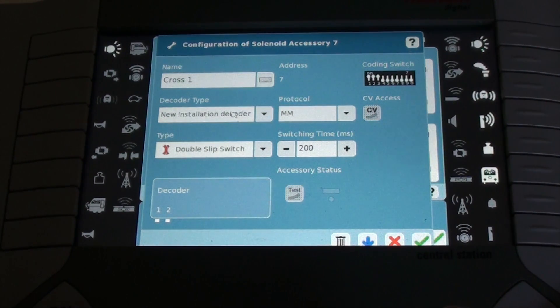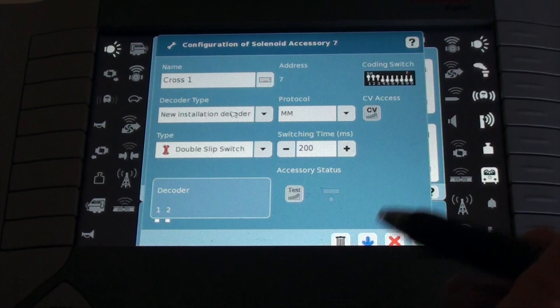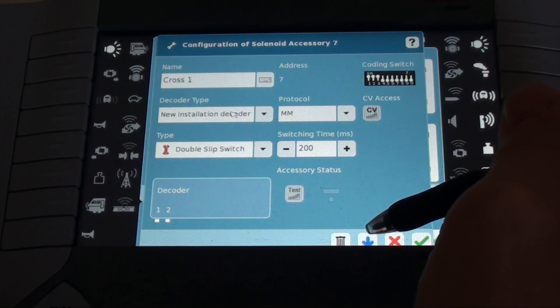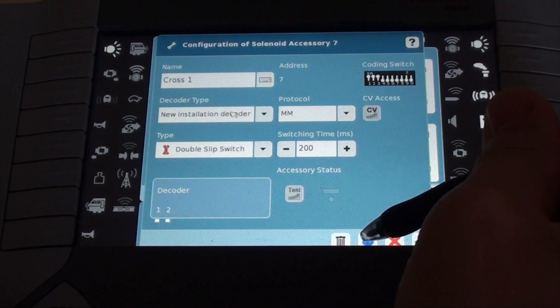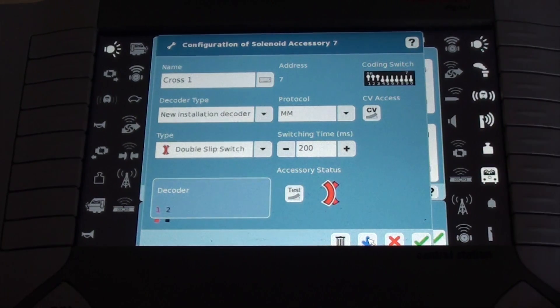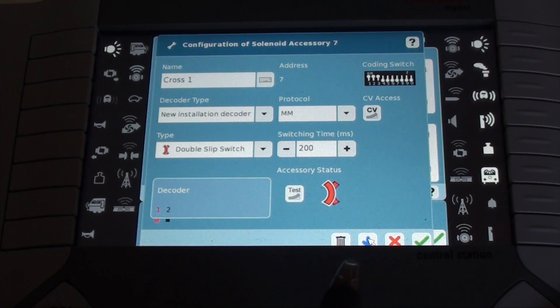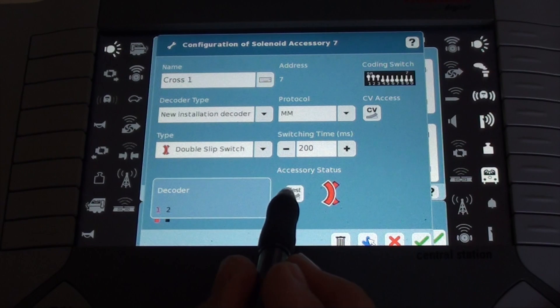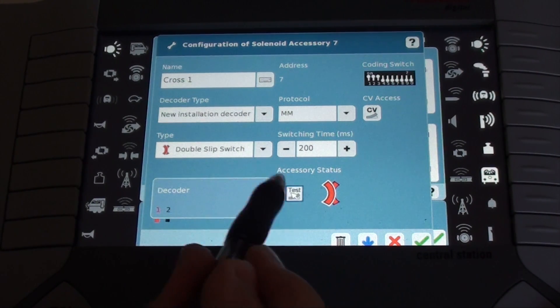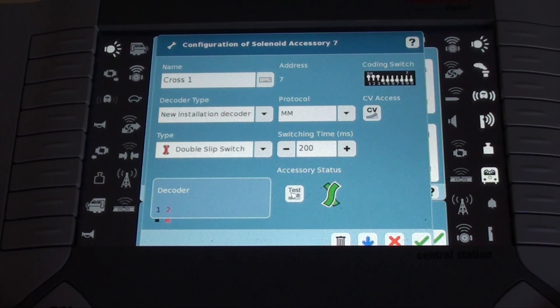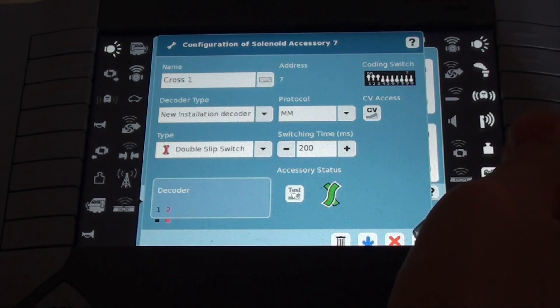Switching time, I'm going to leave alone. And now I need to upload this information. So I hit the blue arrow. It stands for upload. And there we go. It is now programmed into our central station. We can test it. You should hear the turn out click.